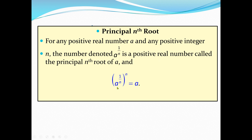We write a to the power one over n, then raise it to the power n again. We went through the rules of multiplication of exponents — if an exponent is raised to another exponent, we multiply. So one over n multiplied by n gives one, because the n's cancel. That's why a raised to the power one over n, to the power n, equals a.